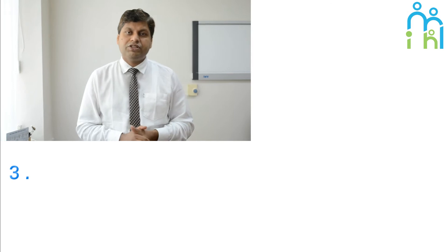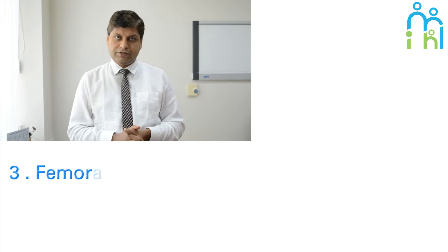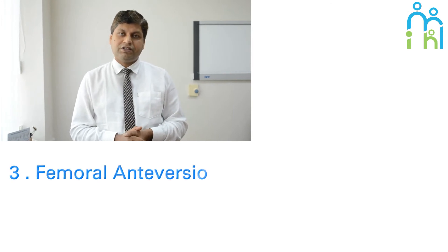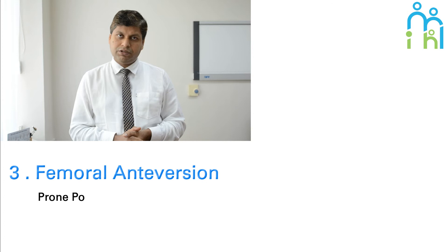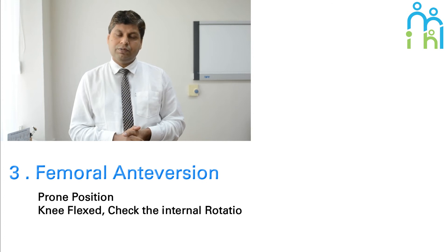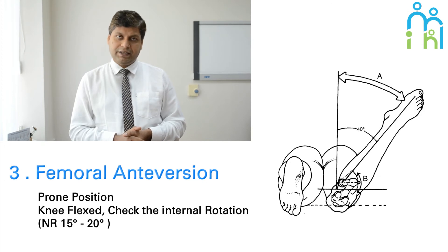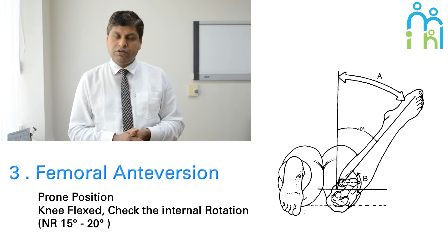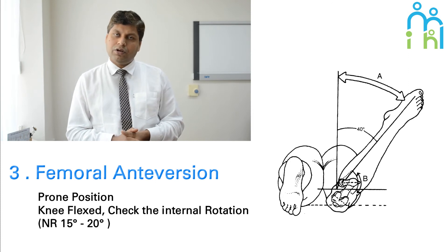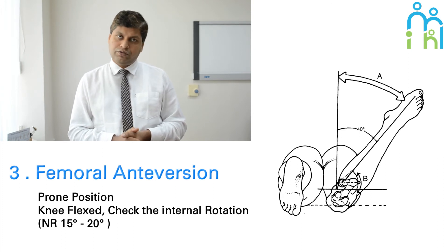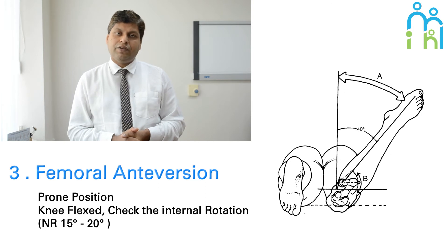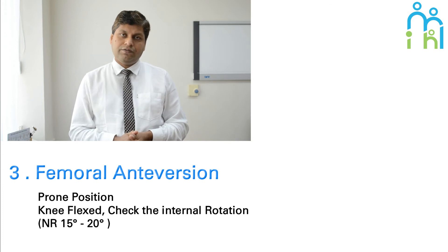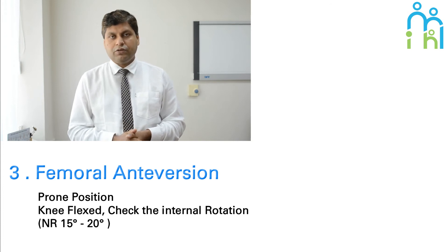Third point: we check femoral anteversion. We ask the patient to lie down in the prone position with the knees bent at 90 degrees, and check the internal rotation of the thigh. Normal femoral anteversion is 10 to 15 degrees. But in cases of excess femoral anteversion, internal rotation will be more and the lateral border of the foot touches the side of the bed.